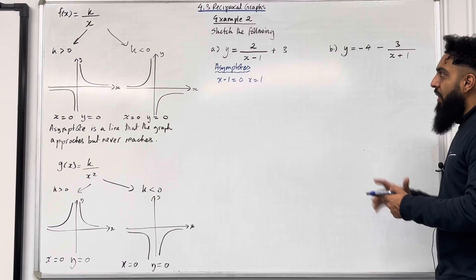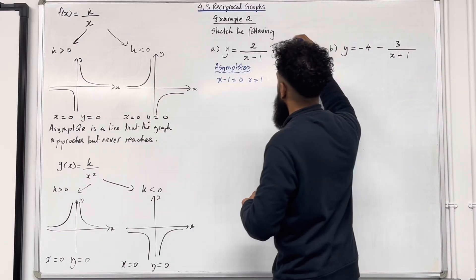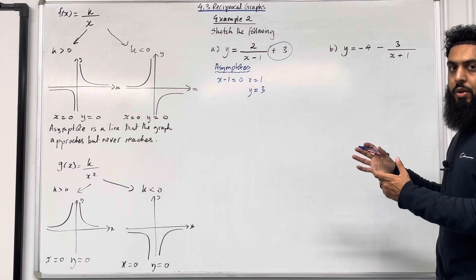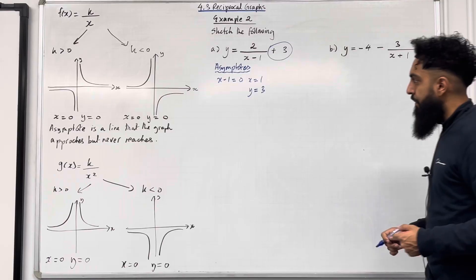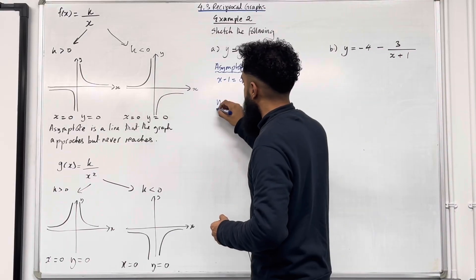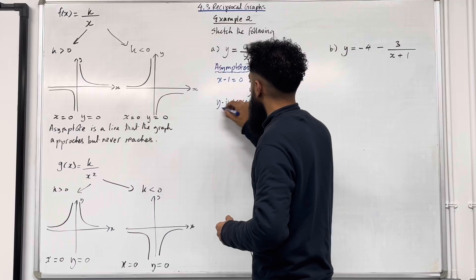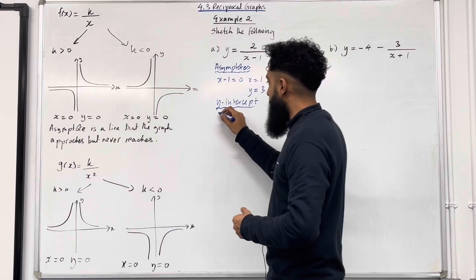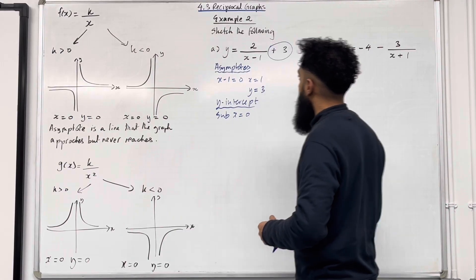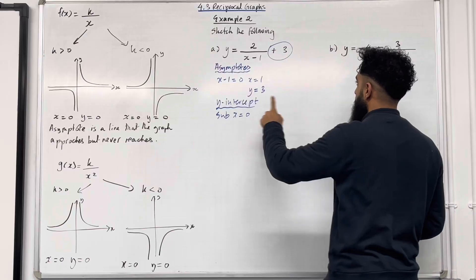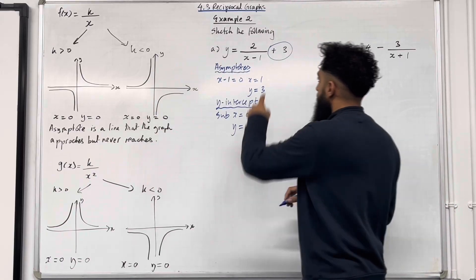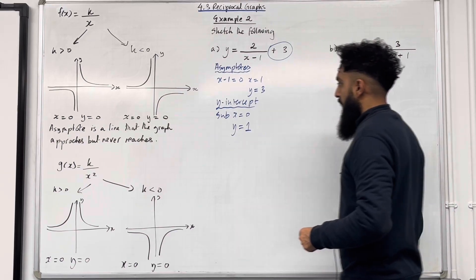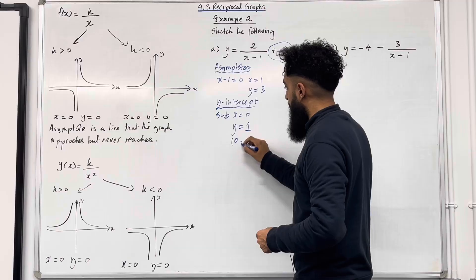To work out the y asymptote, you look at the outer number — in this case it is positive 3. So the y asymptote is y equal 3. Now let's work out the x and y intercepts. Starting with the y intercept: substitute x equal 0. This gives y equal 2 over negative 1, which is minus 2, plus 3, which equals 1. So my y intercept is (0, 1).